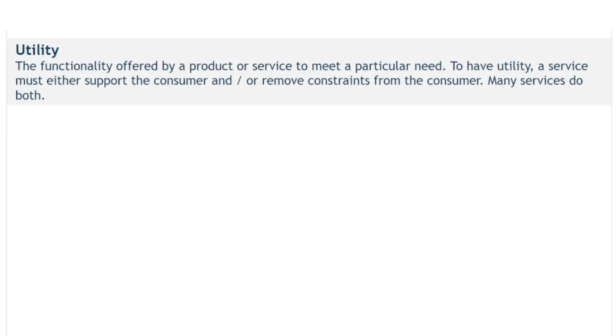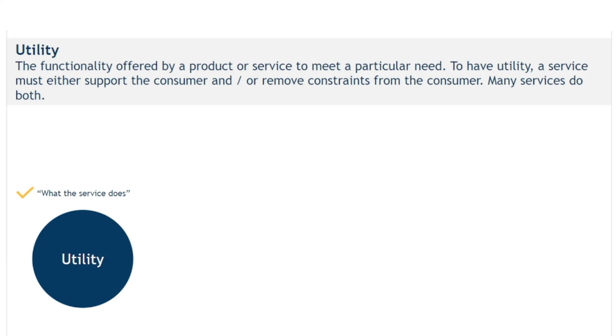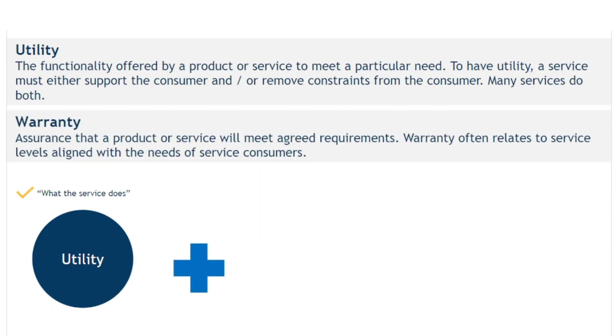To finish this session, let's consider two factors essential to a service's ability to facilitate outcomes and help create value: Utility and Warranty. Utility, which means fitness for purpose or what the service does, is described as the functionality offered by a product or service to meet a particular need. To have utility, a service must either support the consumer and/or remove constraints from the consumer. Warranty, meaning fitness for use or how the service performs, is defined as the assurance that a product or service will meet agreed requirements. Warranty often relates to service levels, addressing areas such as service availability, capacity, security and continuity.